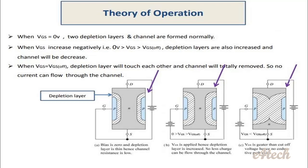When VGS increases negatively — VGS less than 0 — the depletion layers also increase and the channel width decreases. The gate is made negative with respect to the source, causing the depletion layer thickness to increase. Normally, the drain-source current flows through the N-channel.